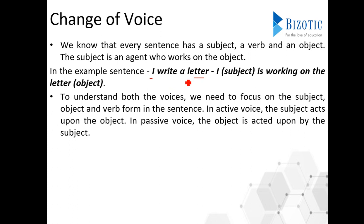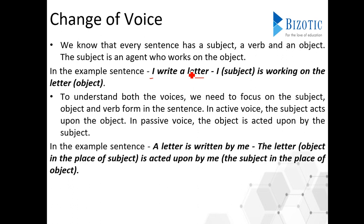To understand both the voices, we need to focus on the subject, object, and verb form in the sentence. In active voice, the subject acts upon the object — so 'I' acts upon 'letter.' In passive voice, the object is acted upon by the subject. In the passive voice example 'A letter is written by me,' the letter is the object but it is in the place of the subject.